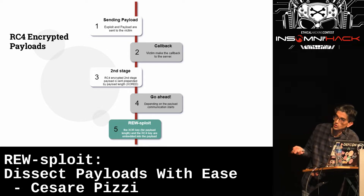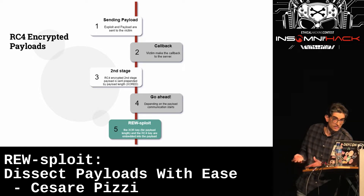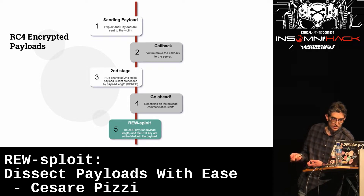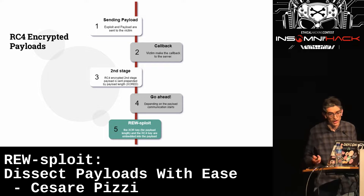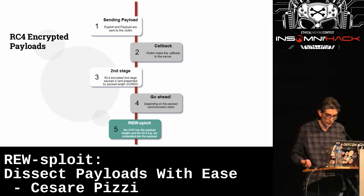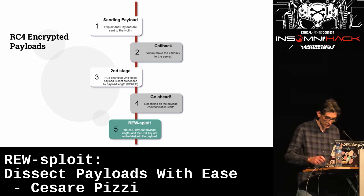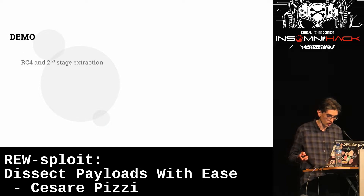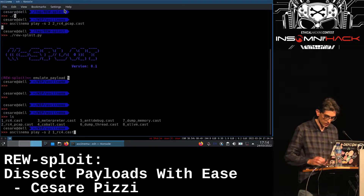What RE-sploit can do here is follow this exchange by emulating the code and extracting artifacts from the payload itself, allowing you to analyze in a much faster way what is happening during the attack.